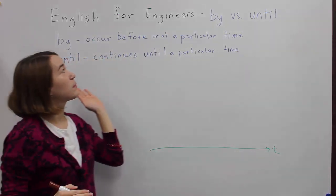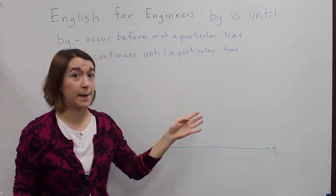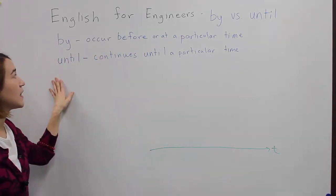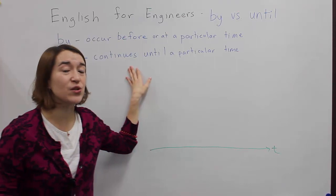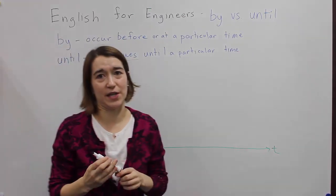By is something that occurs before a certain point in time, before or at a particular time. And until is something that continues, and the key word here is continues until a particular time.